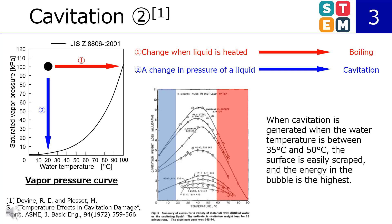This figure is created from a paper. The specimen surface is processed by cavitation generated at each water temperature, and the amount of surface erosion is shown. When cavitation is generated with water temperature between 35 degrees Celsius and 50 degrees Celsius, the surface is easily eroded, and the energy in the bubbles is reported to be highest in this graph.